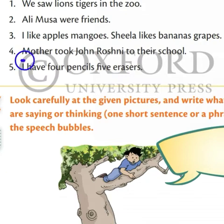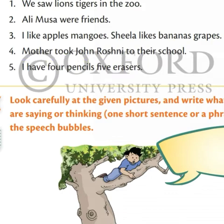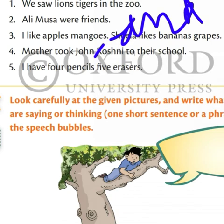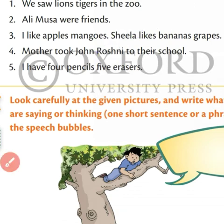Number four: Mother took John and Roshni to their school. Here two names are used — John and Roshni — but 'and' is not used, so this sentence is incomplete. We will use 'and' after John: Mother took John and Roshni to their school.